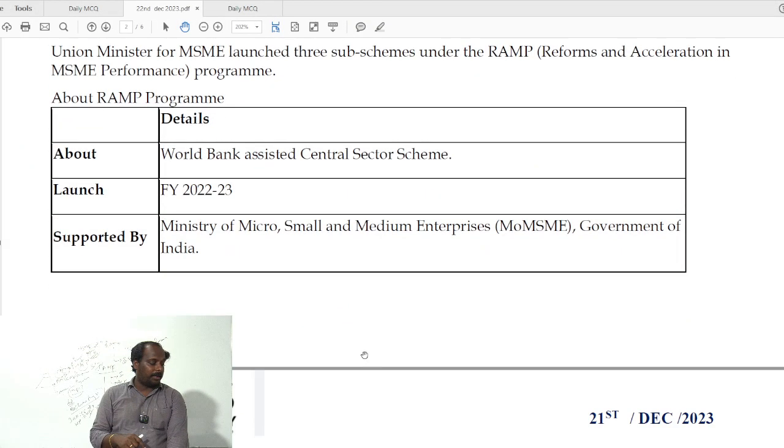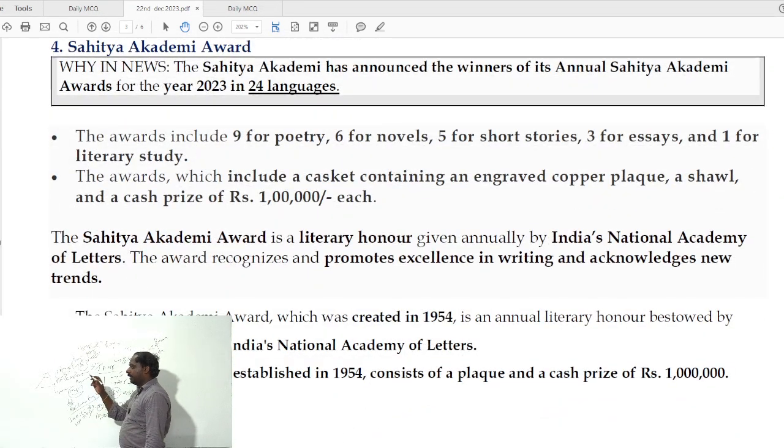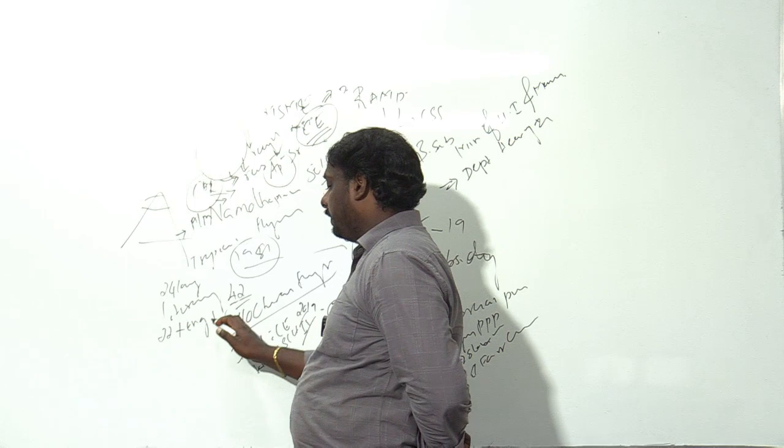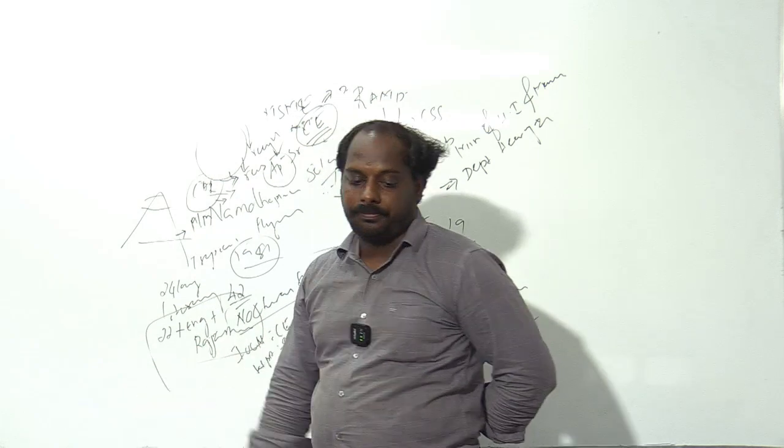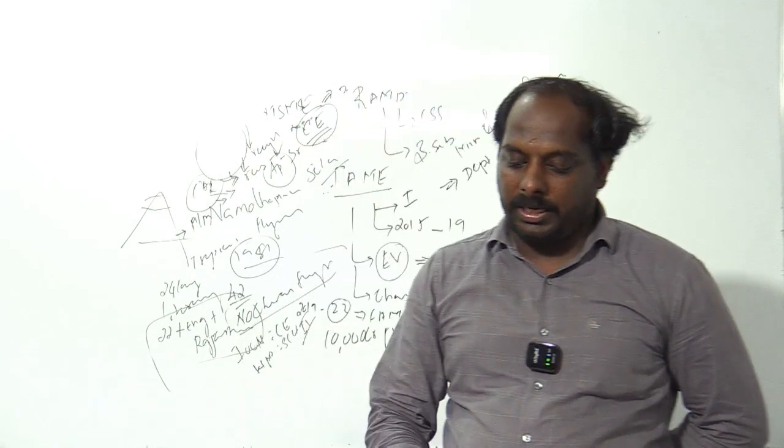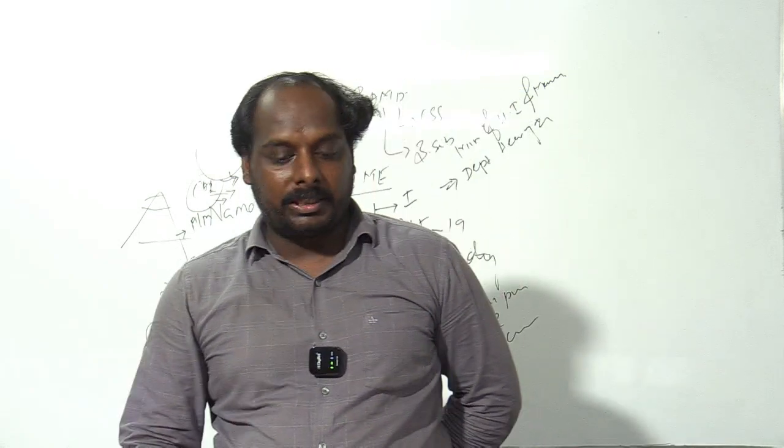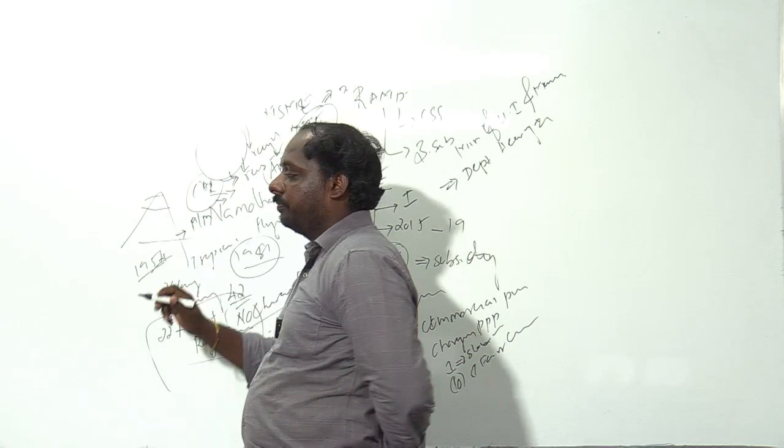Then, recently Sahitya Academy Award was announced for 2023. Sahitya Academy Award is very important for the UPSC exam. For 24 languages, they provide literary awards. The official language, initially English was recognized, plus Rajasthani. Very important for your examination - Rajasthani language and English language are added to 24 languages.